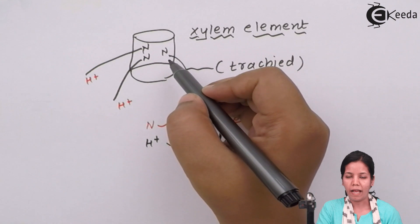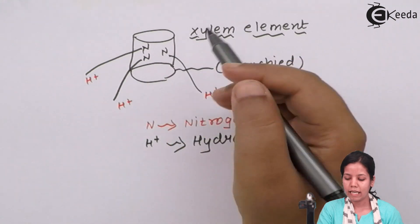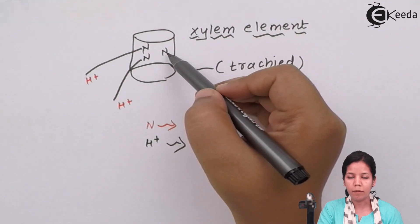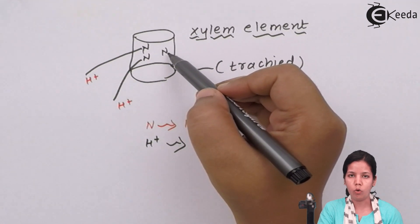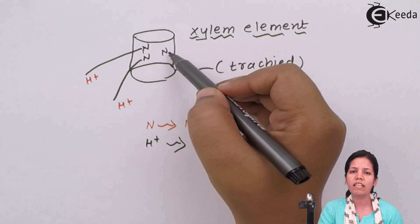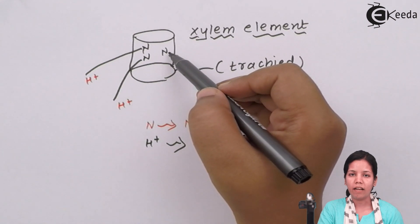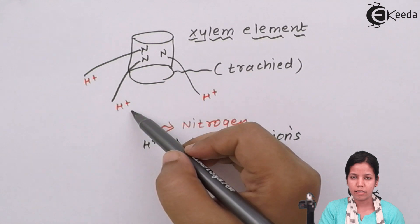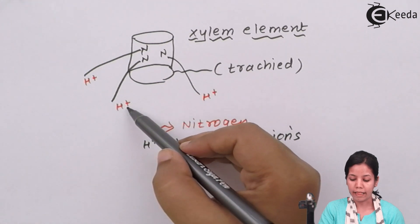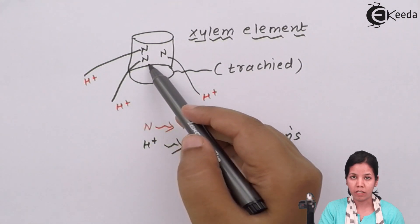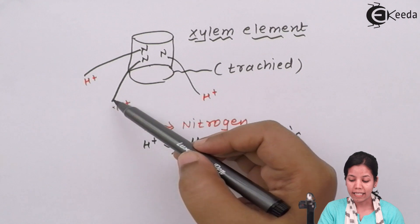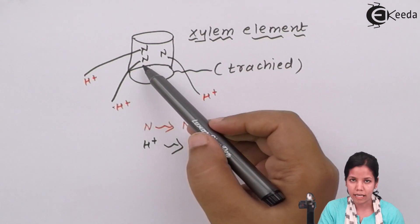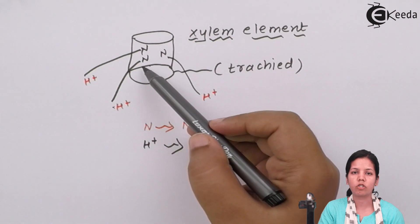During transpiration, inside the xylem vessel there are nitrogen elements which are present, and we all know the valency of nitrogen is not satisfied. This unvalenced nitrogen helps to carry H+ ions for water molecules, and this upward movement of H+ ions inside the xylem vessel and precisely into the plant cell is nothing but transpirational pull.